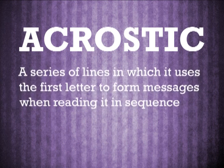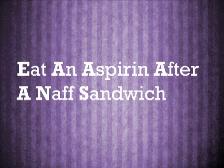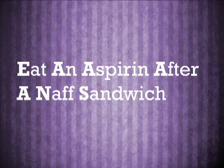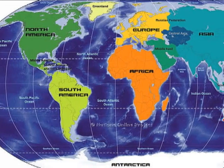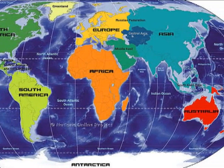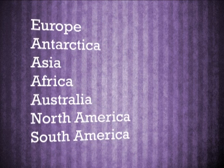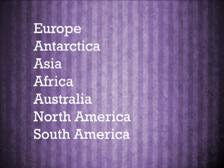Similar to an acronym, an acrostic is a series of lines in which it uses the first letter to form messages when reading it in a sequence. For example, 'eat an aspirin after a nap sandwich' is a common phrase for memorizing the seven continents. It stands for Europe, Antarctica, Asia, Africa, Australia, North America, and South America.